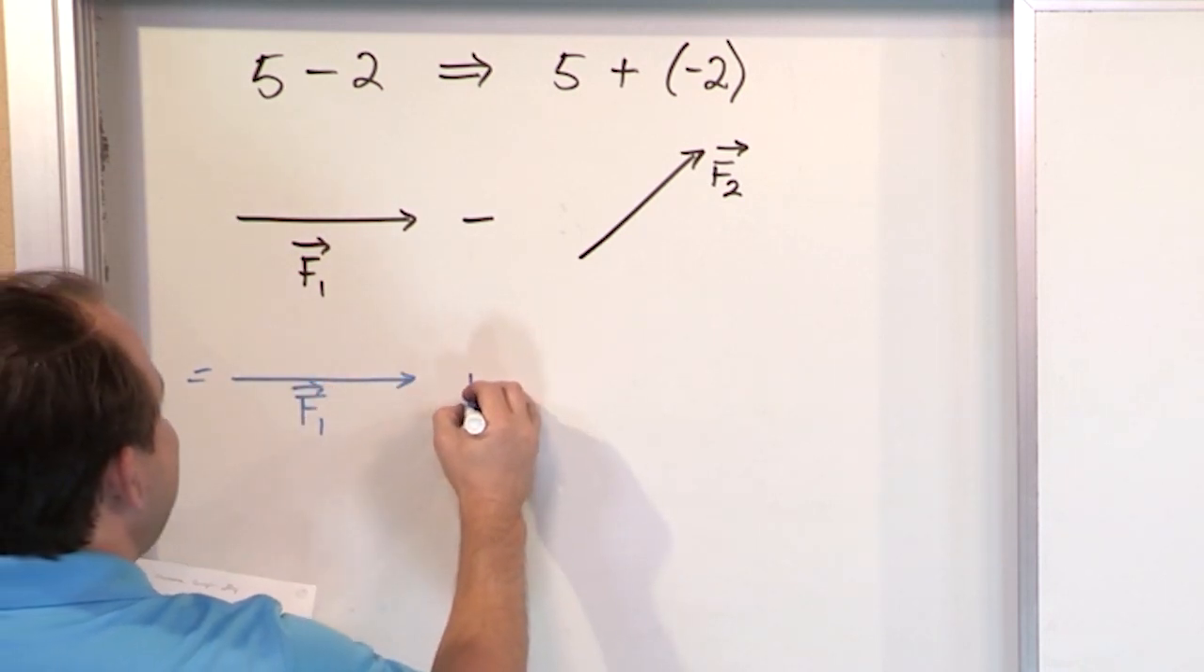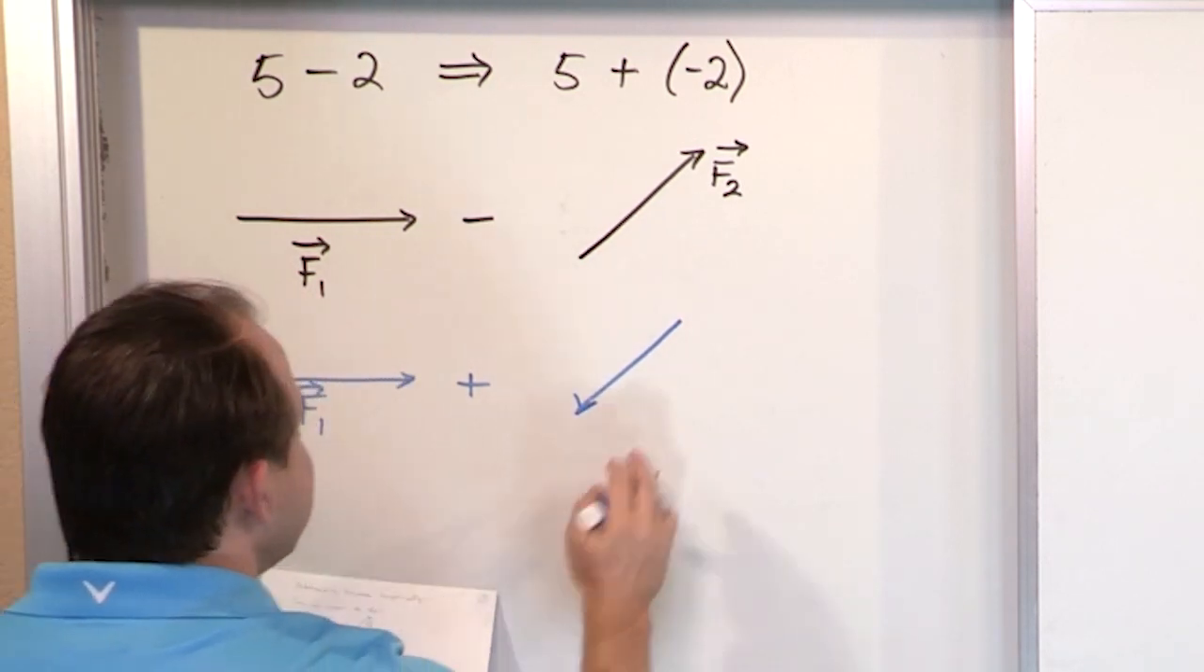So this is going to be the same thing, equivalent to if I were to take F1 like this, and add to it another vector which is the same exact length as this one, but not pointed up, pointed down. This vector is actually not F2, this is vector negative F2.